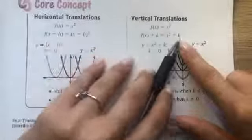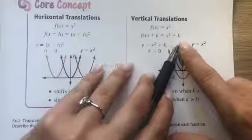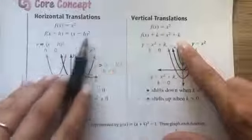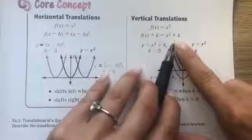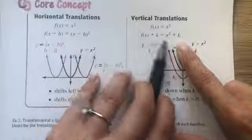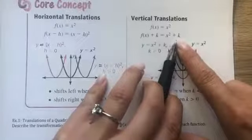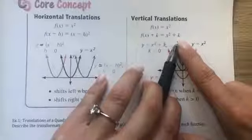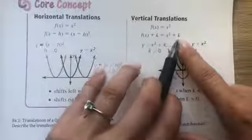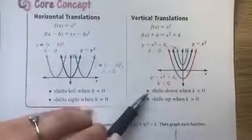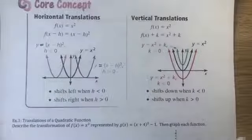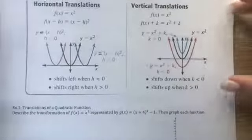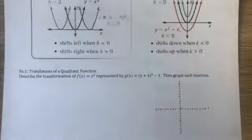For vertical translations, we add a constant k after the function, which changes the output. In function notation it's f(x) + k, giving x² + k. This plus k tells us the vertical translation — no sign flip needed. If k is negative, the graph shifts down; if k is positive, the graph shifts up. These pictures are also in your textbook if you want to look more closely.